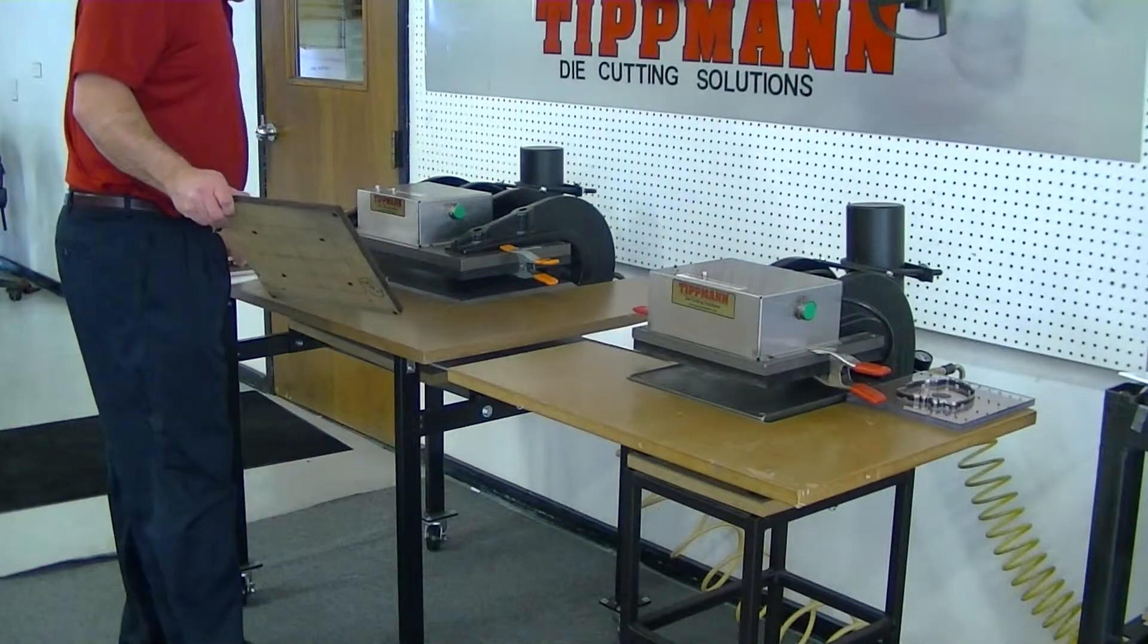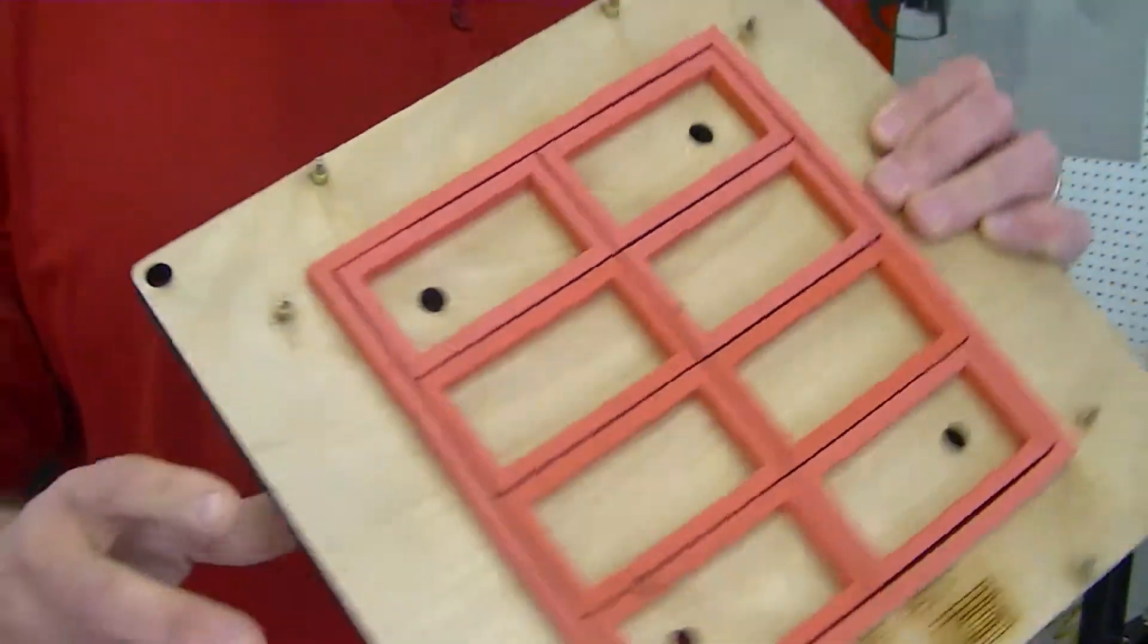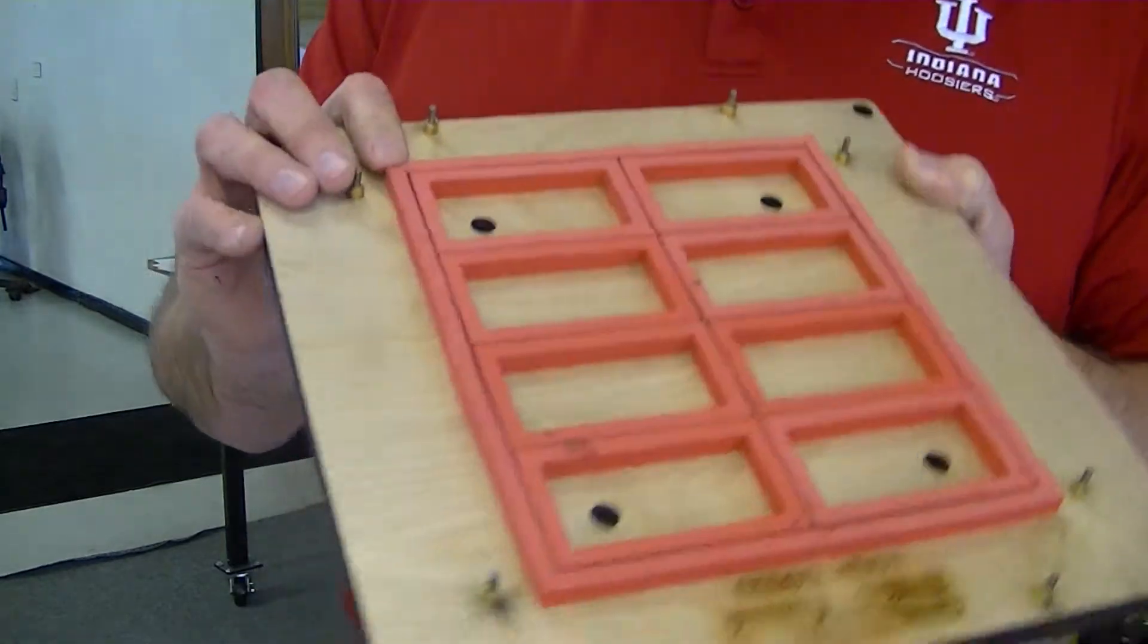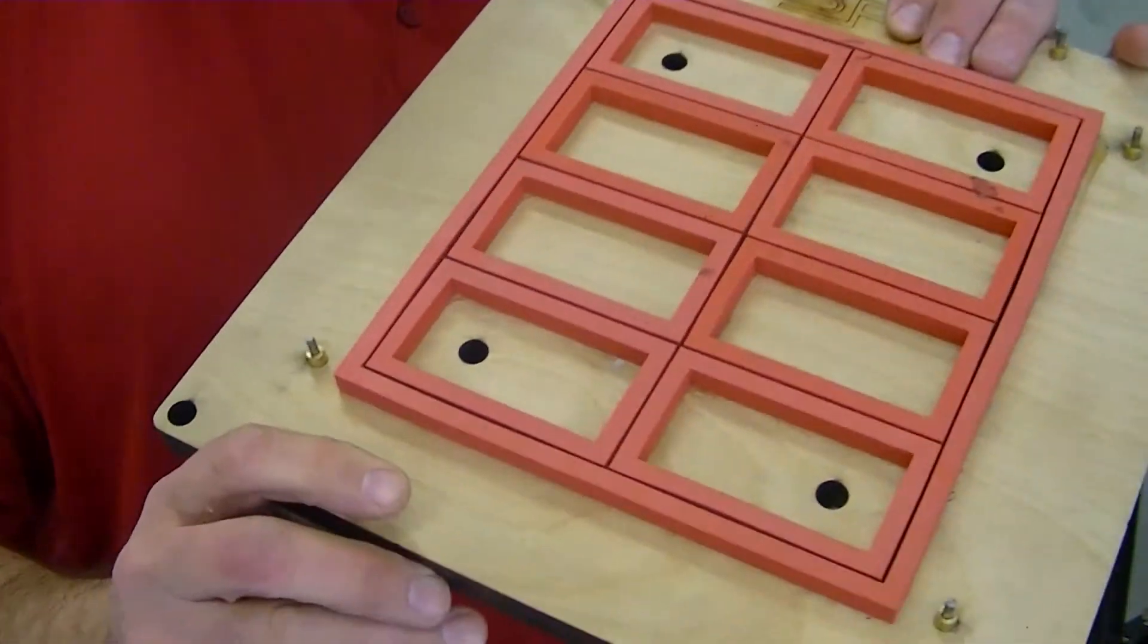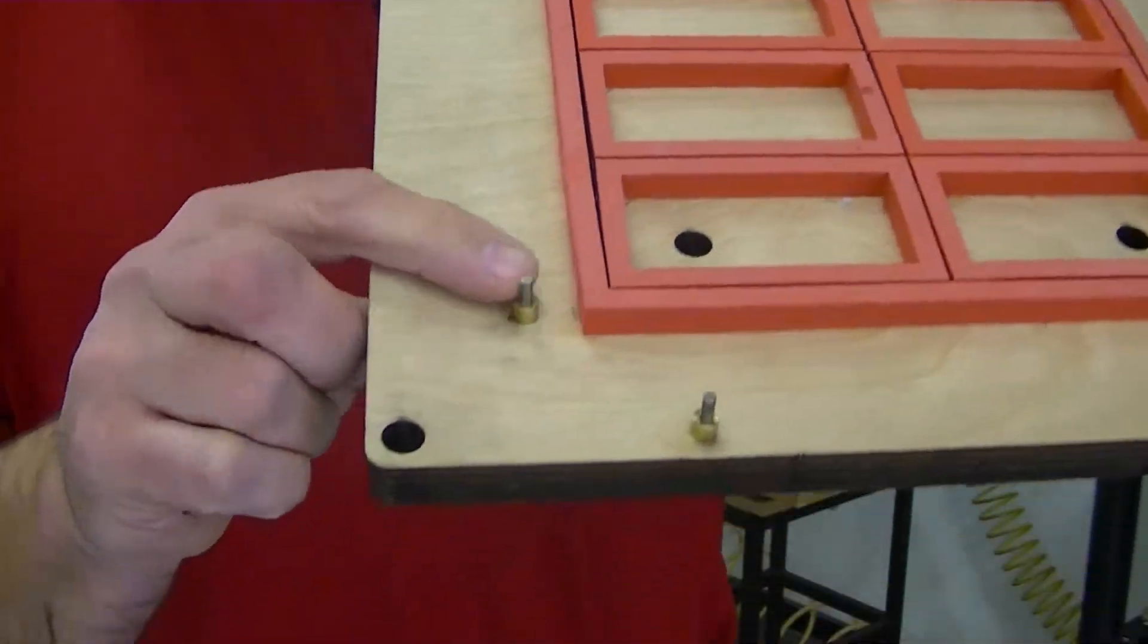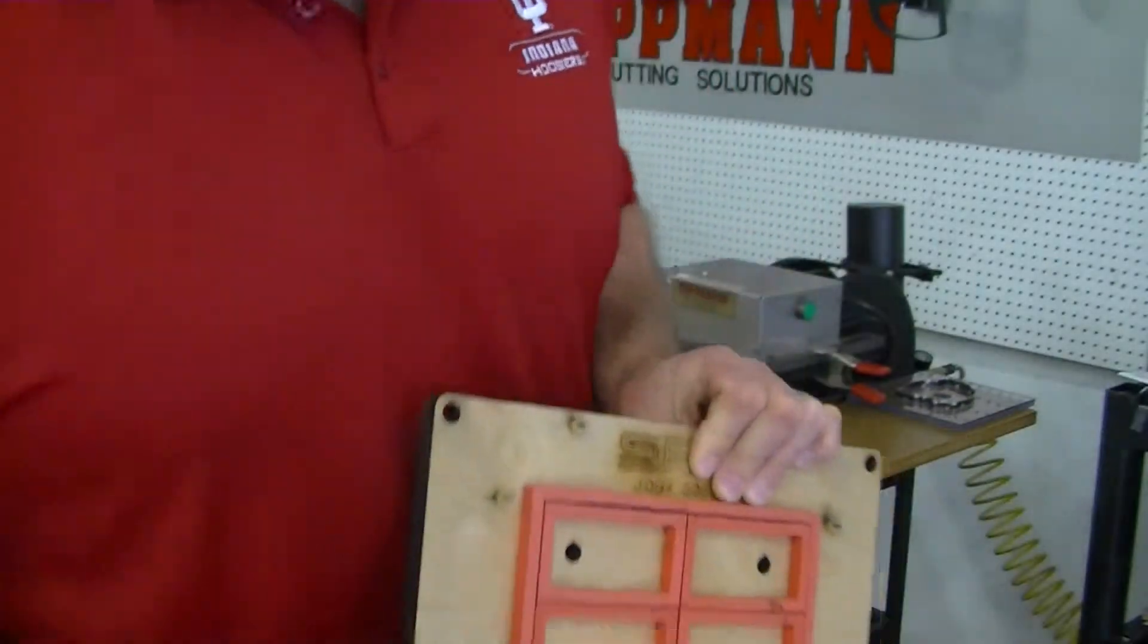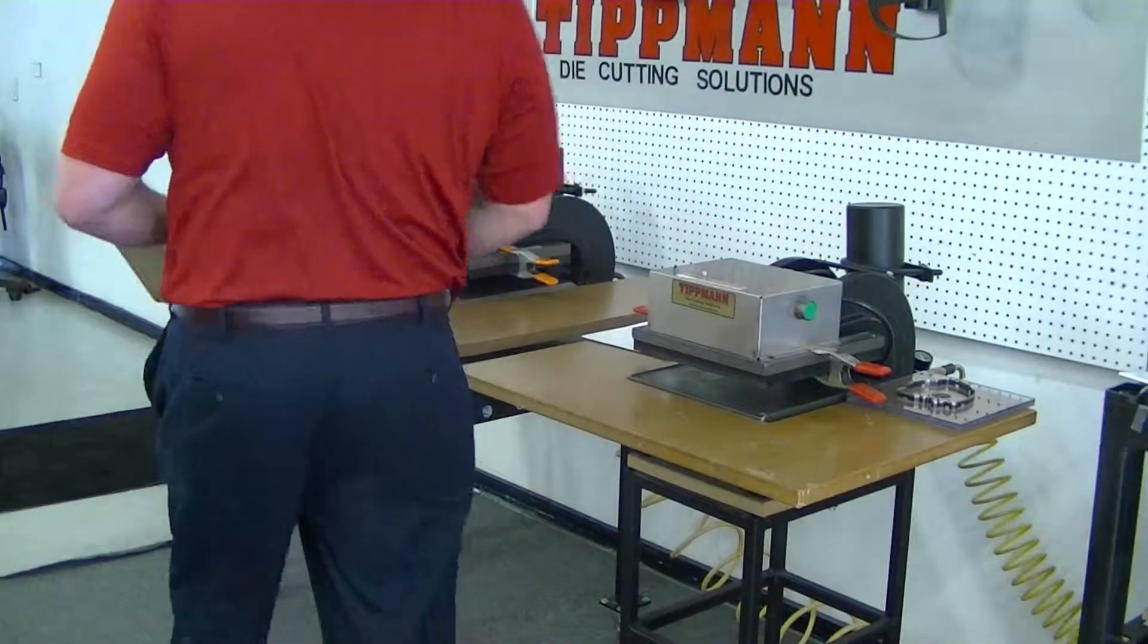This type of die, you can build registration pins into it. That sheet of paper that I just cut was larger than an 8½ by 11, but this die was designed to cut an 8½ by 11 sheet of paper. That's what these little spring pins are for. Therefore, you can easily align your material to line up with printing on there.